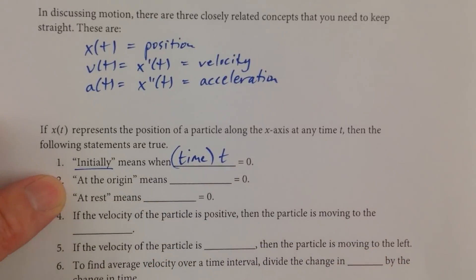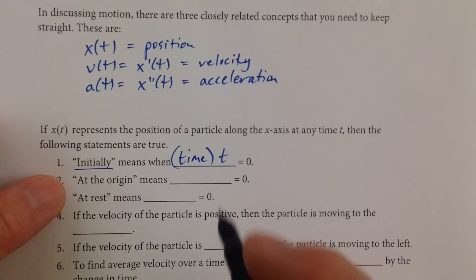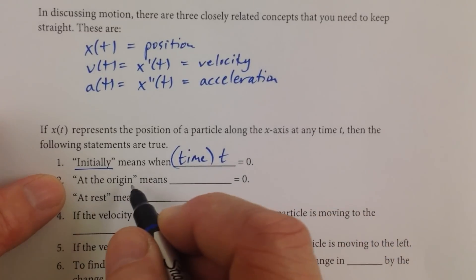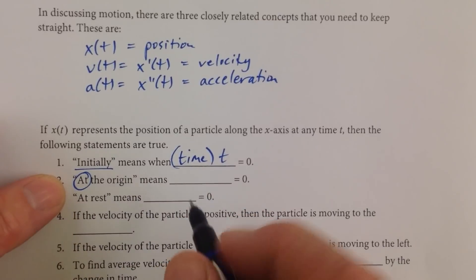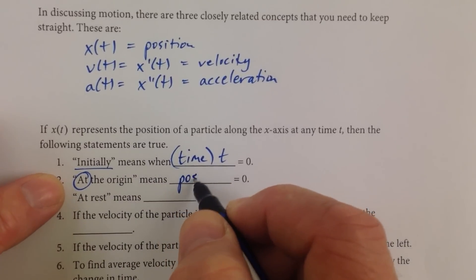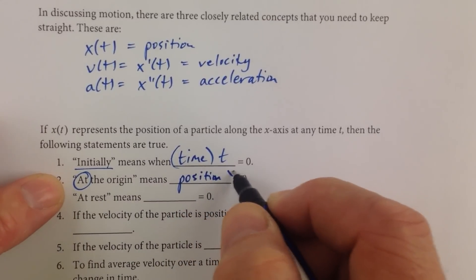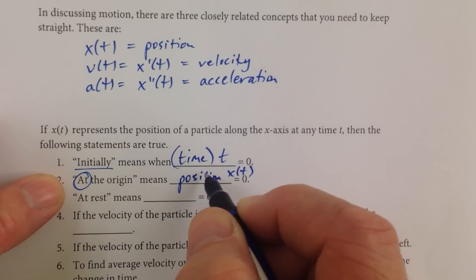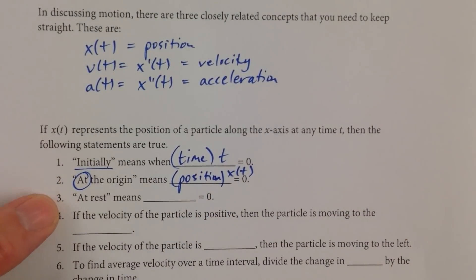At the origin, then, so at the origin means, again, either position, velocity, or acceleration. Well, in this case, at the origin, at is a location, and location is position. Position equals zero. So we're going to say x(t) is equal to zero. So that's the position.